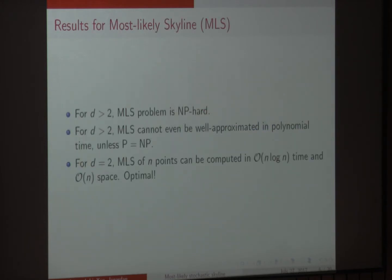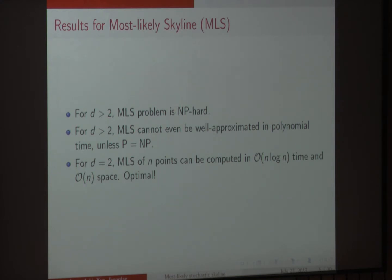So what are our results? We have two negative results and one positive result. The negative results are that, as you might expect, for dimensions greater than or equal to 3, the problem is NP-hard, and in fact it cannot even be well approximated in polynomial time. On the positive side, for dimension equal to 2, we can compute the most likely skyline optimally in polynomial time. You can approximate it with an approximation factor, and in fact even stronger results will be shown.